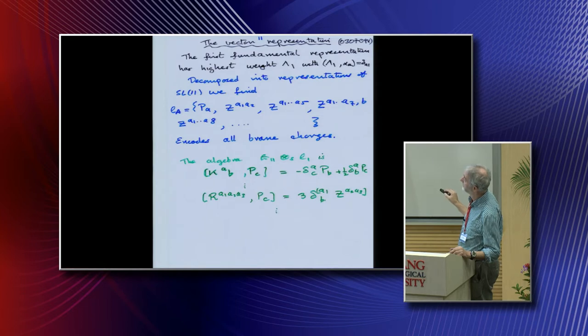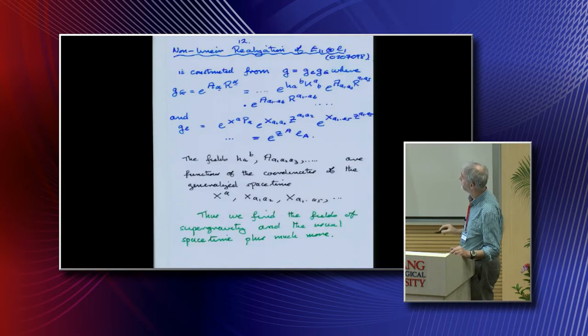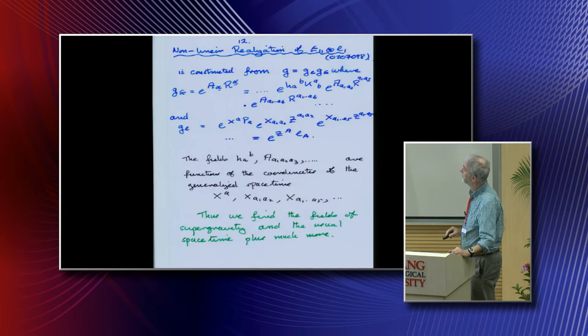You could think of this as the charge associated with a particle, and the charge associated with a two-brane and a five-brane, because these are the same as the central charges in the supersymmetry algebra. But more generally, there's extremely good evidence that all the charges in strings and branes are somehow included in this multiplet. And you see, they start to get very complicated.